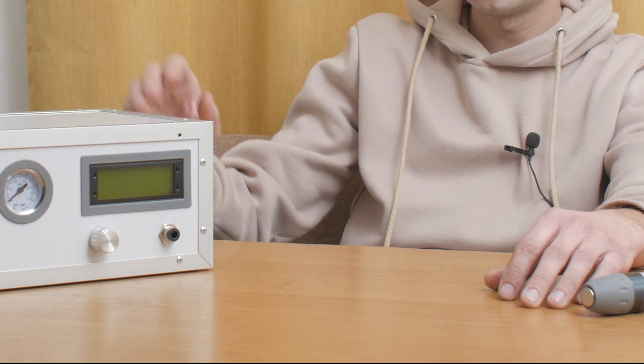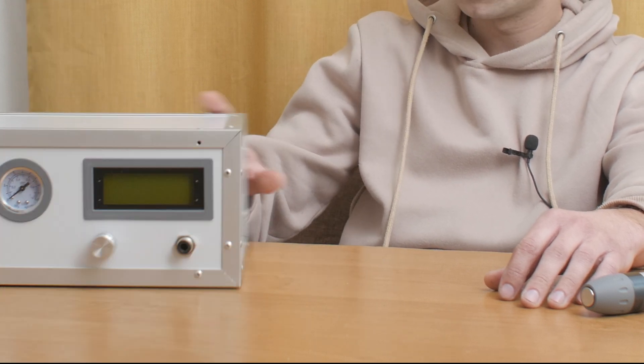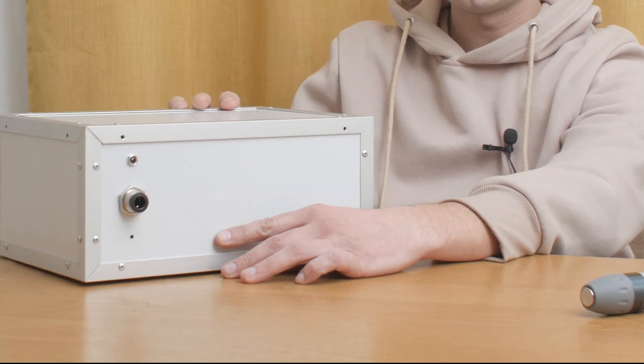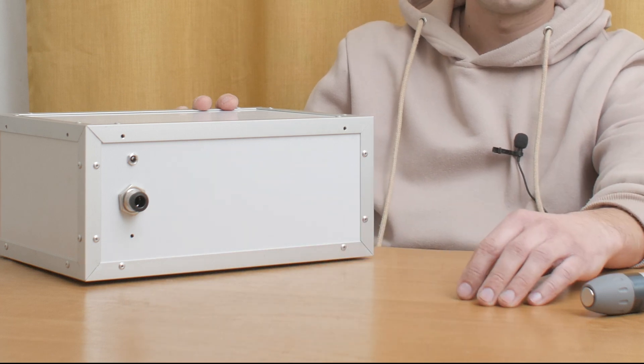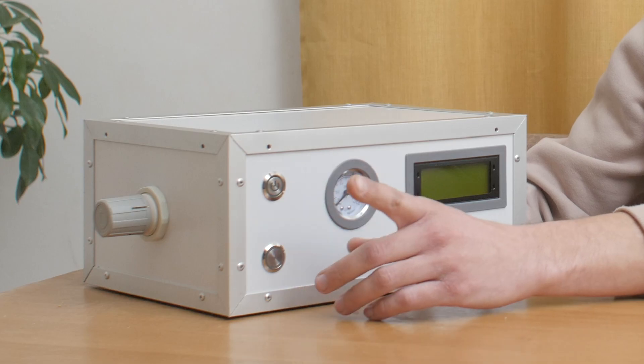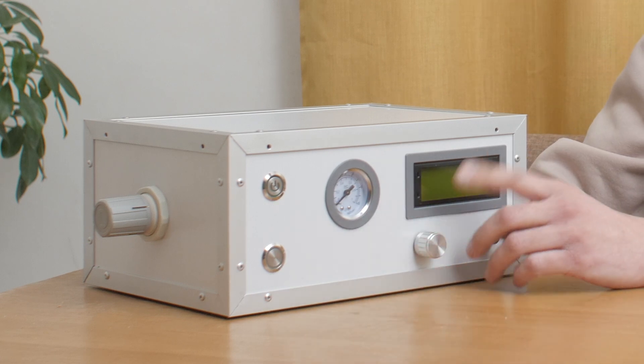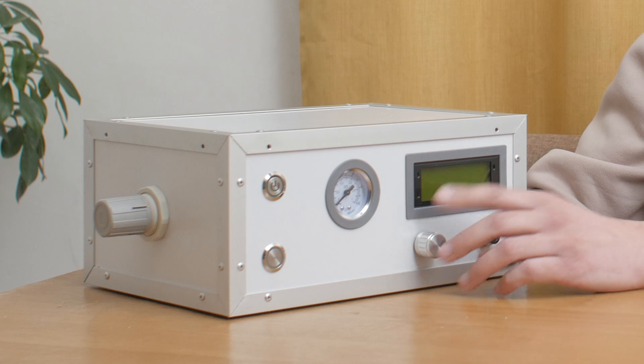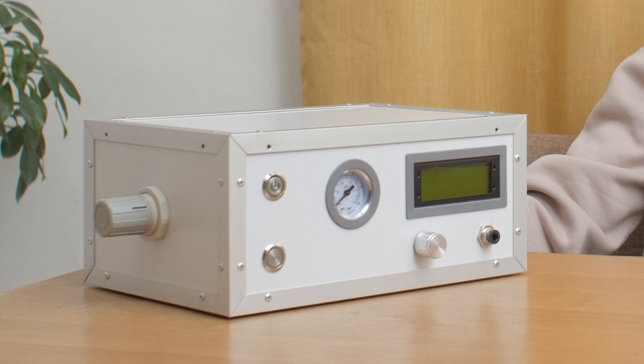The next part is a control unit. Let's look closer and see what we have here. At the back we have an input for a 10mm pneumatic tube and 12V power from an external power supply. On the front we have a power button, a button to start the procedure, a mechanic gauge, a display, a knob, and an outlet under the 6mm tube for the massage gun.